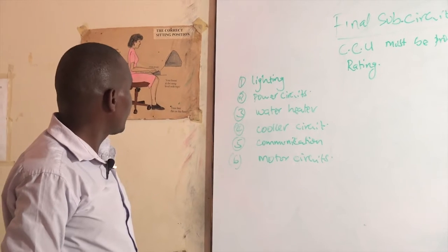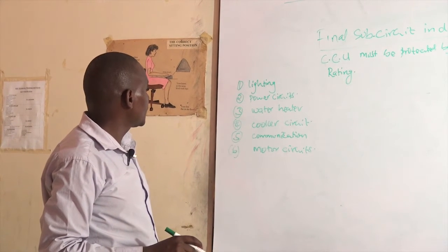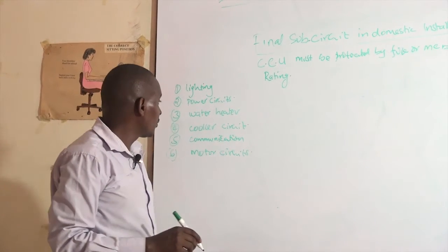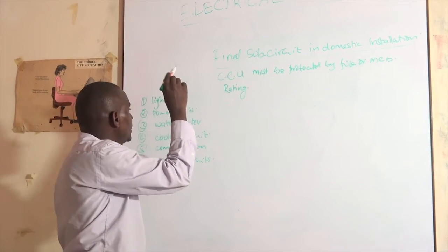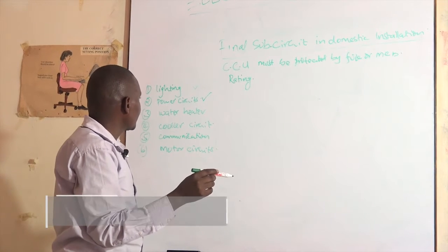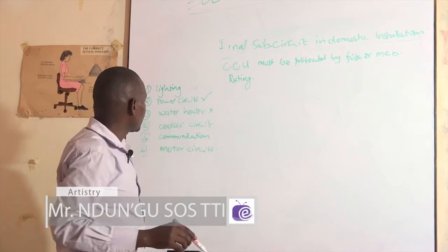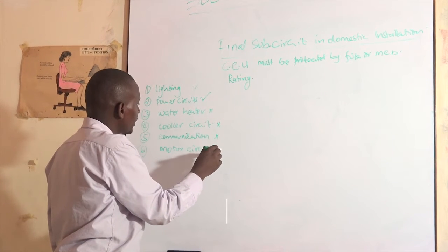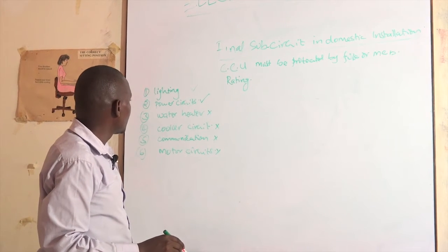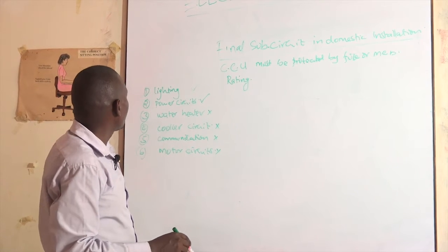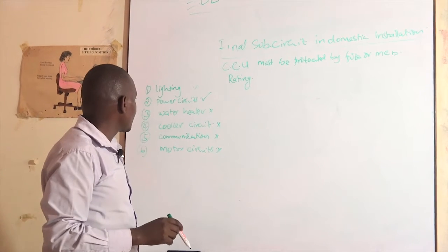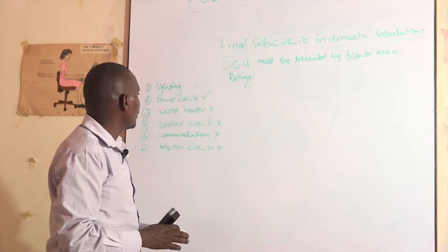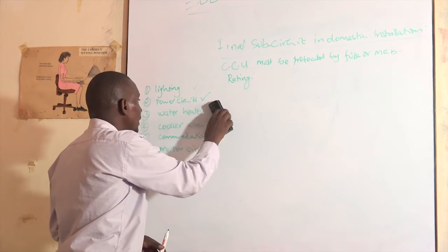This is the maximum number of final sub-circuits that can form a domestic installation. What happens is that most domestic installations use only some of these. Lighting is a must, power circuit is a must. Water heater is not a priority, cooker circuit is not a priority, communication is not a priority, and a motor circuit might not be a priority. So for small domestic installations, you'll find them just using lighting and power circuit.